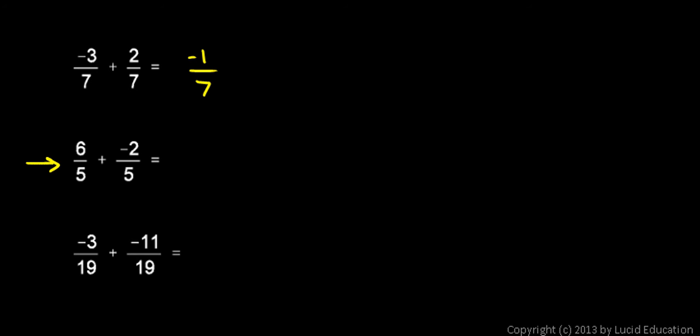In this next example, I have 6 fifths plus negative 2 fifths. Well, they're like fractions, so I can just combine the numerators directly. 6 plus negative 2 is 4. That's the same as 6 minus 2. So 6 fifths plus negative 2 fifths is 4 fifths.